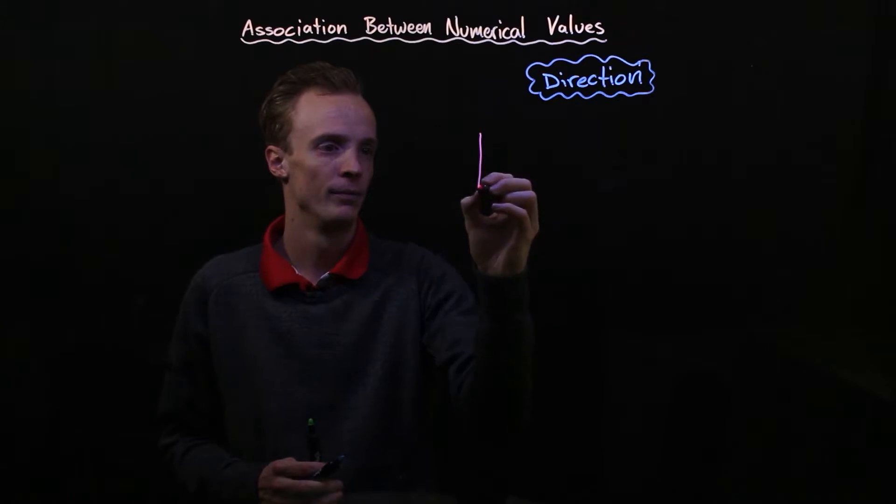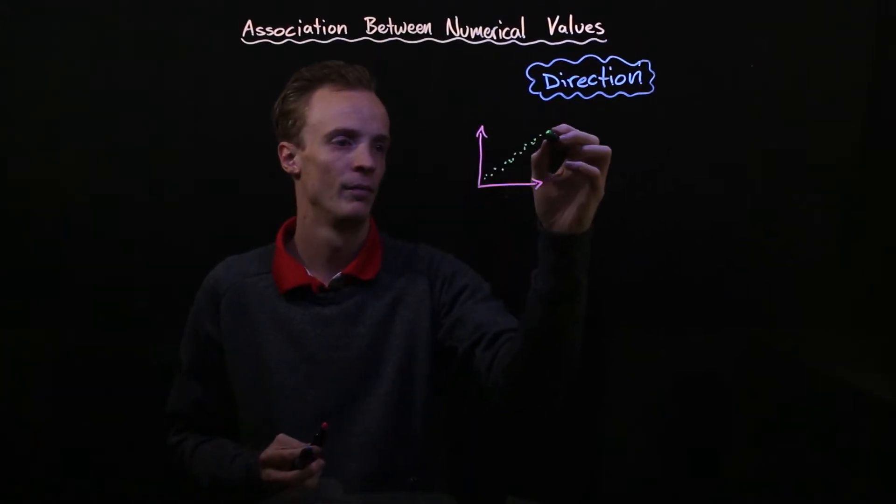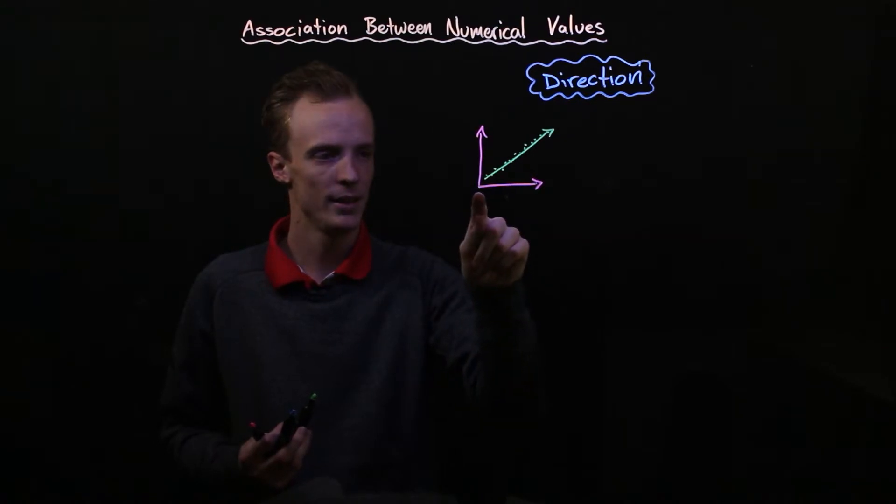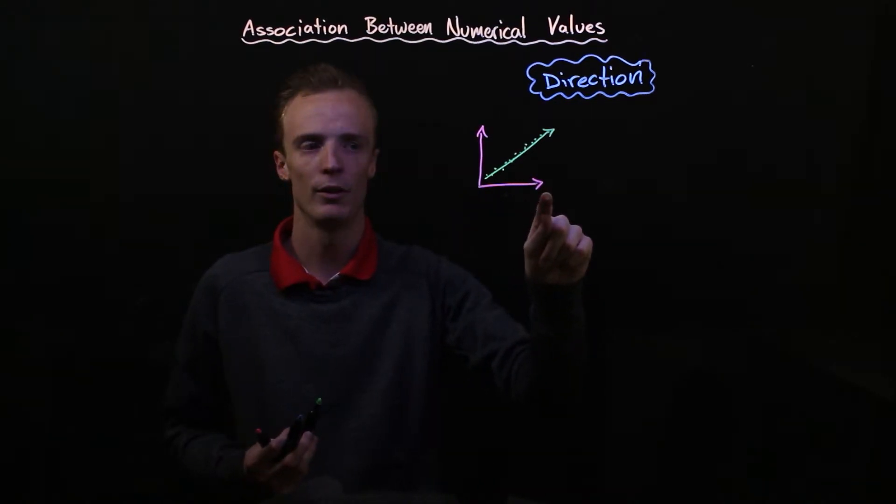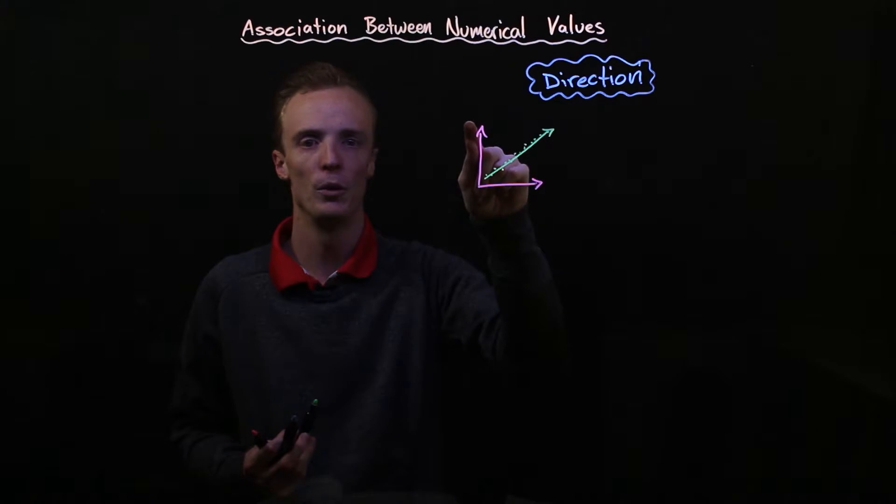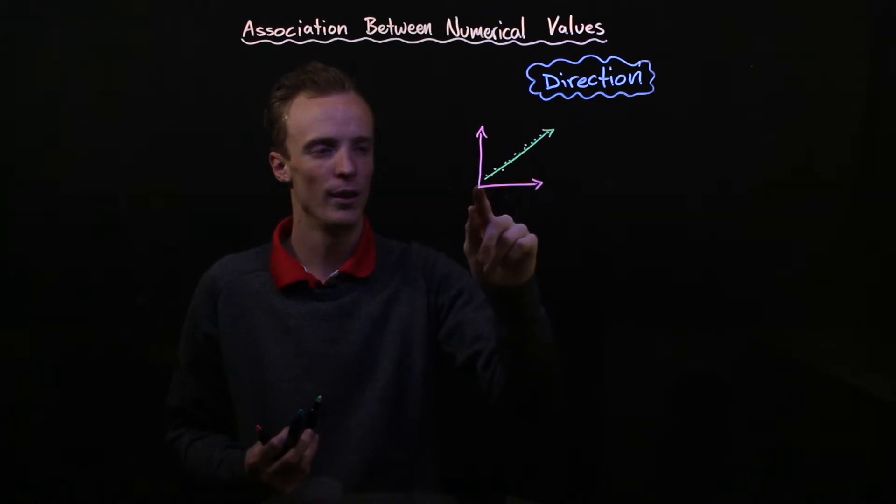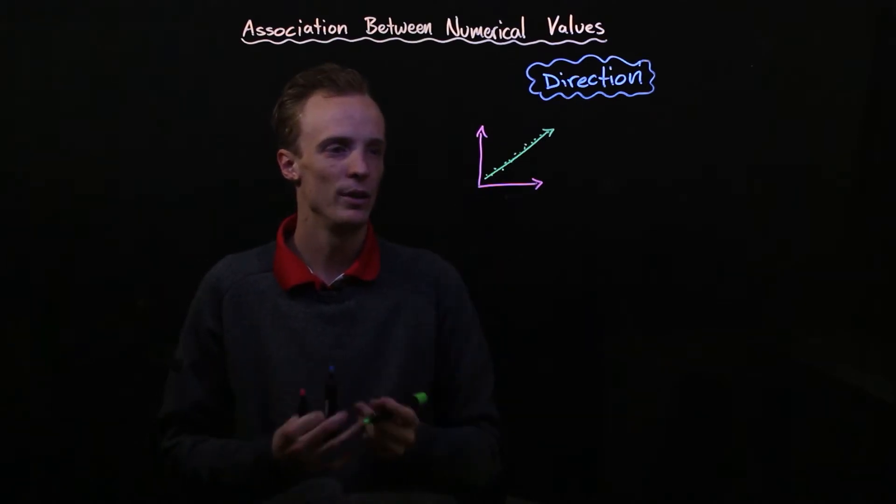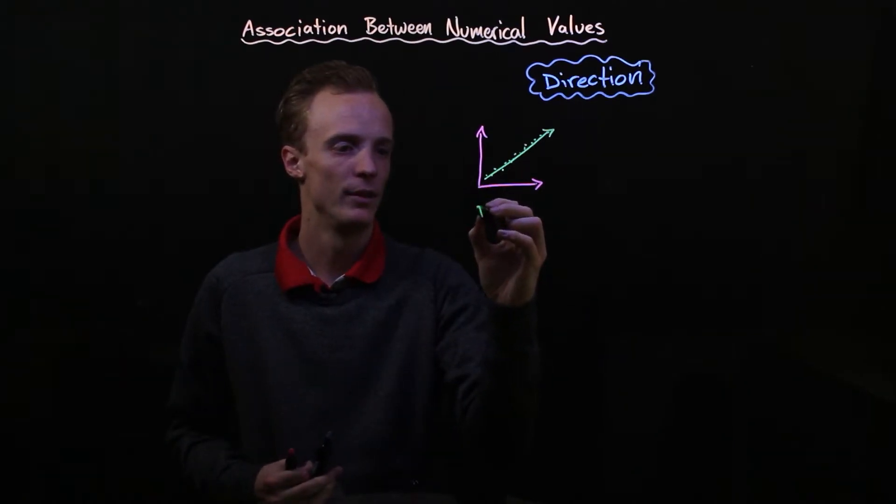The first direction looks a little bit like this where as the explanatory variable increases the response variable also increases and you'll find as we go from left to right it seems to be going up. We call this direction a positive direction.